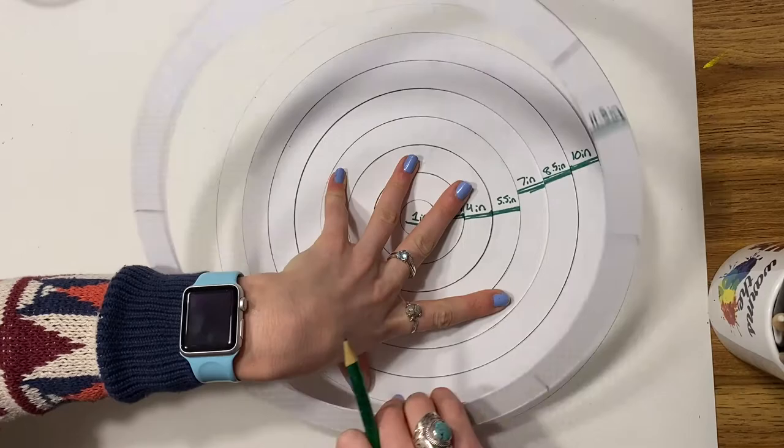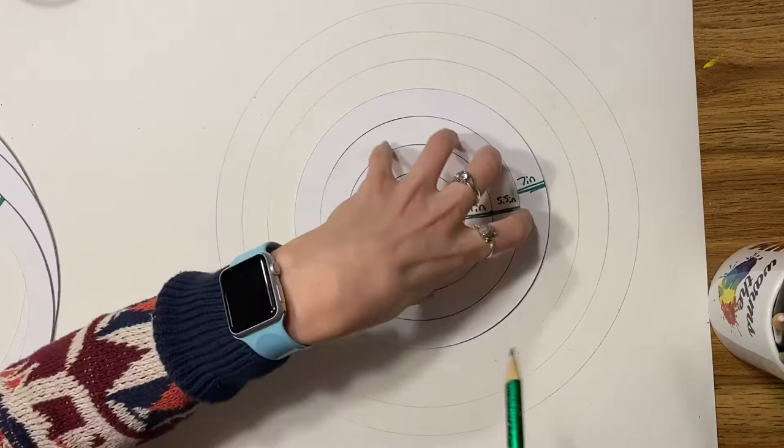When tracing, you want to keep one hand in the middle, flat and still, and go around the perimeter, lightly tracing the circle. Remove the next ring as you finish.